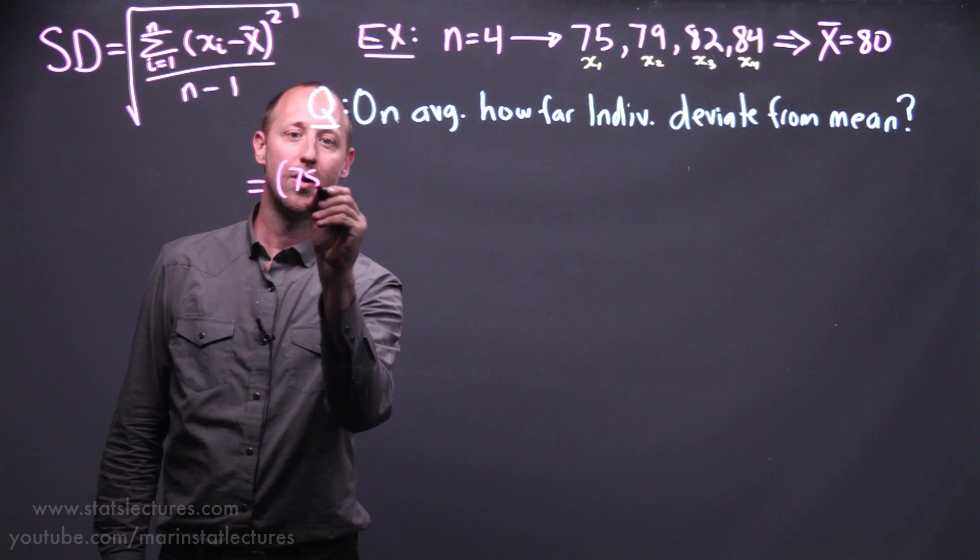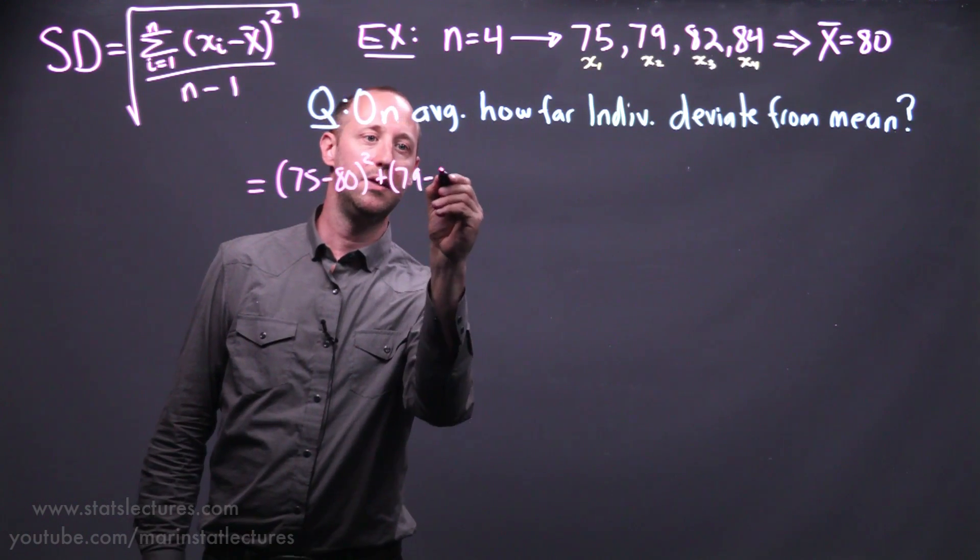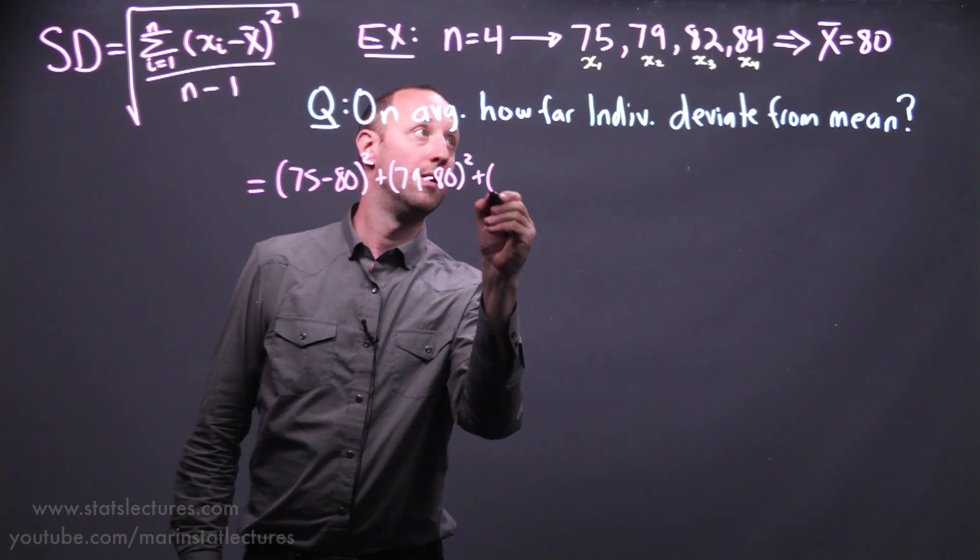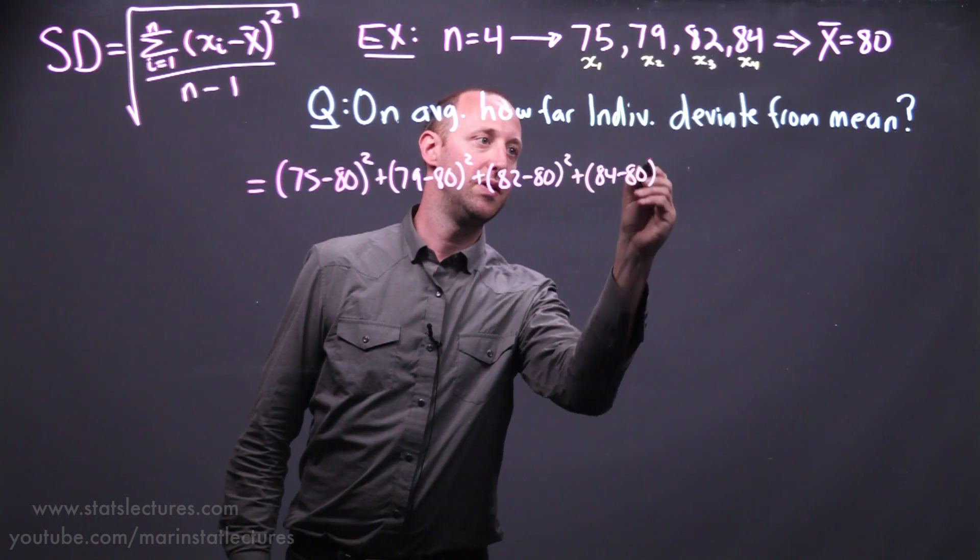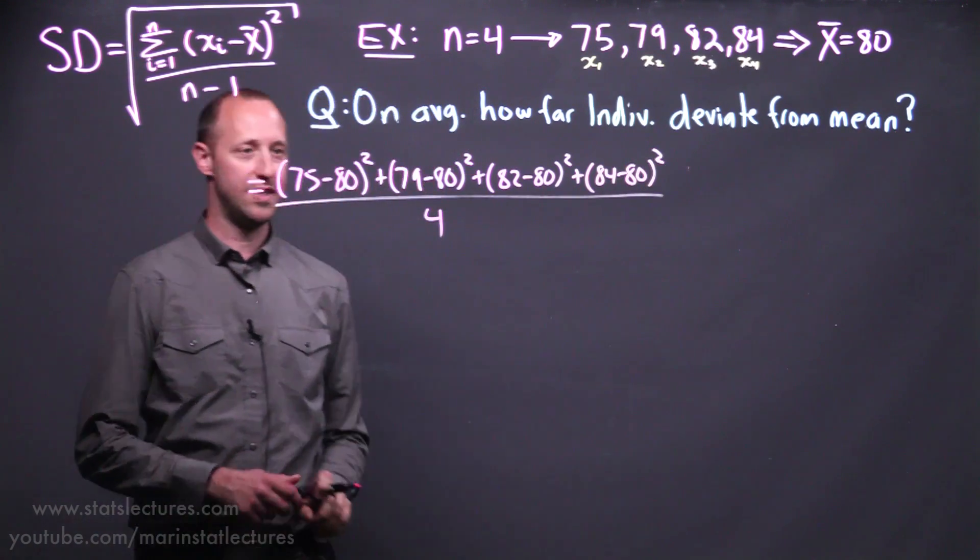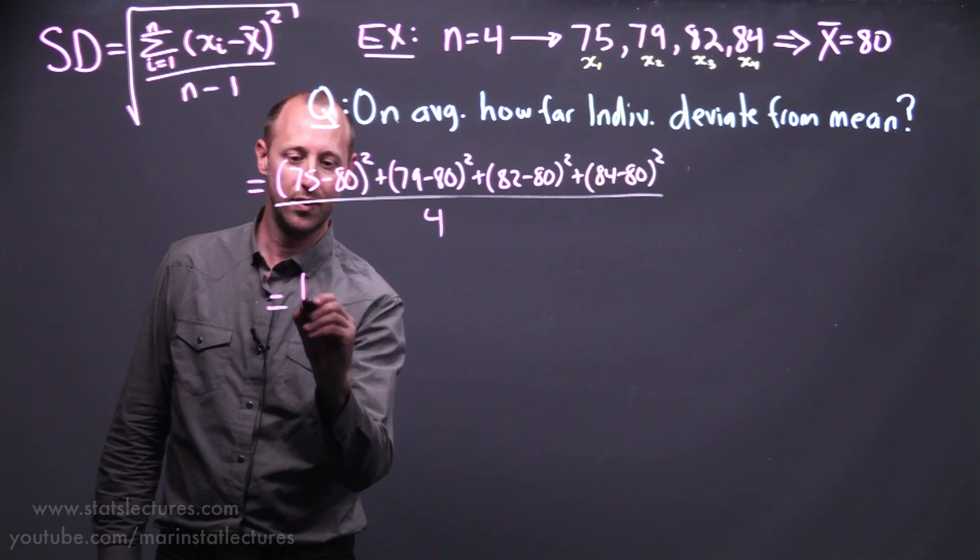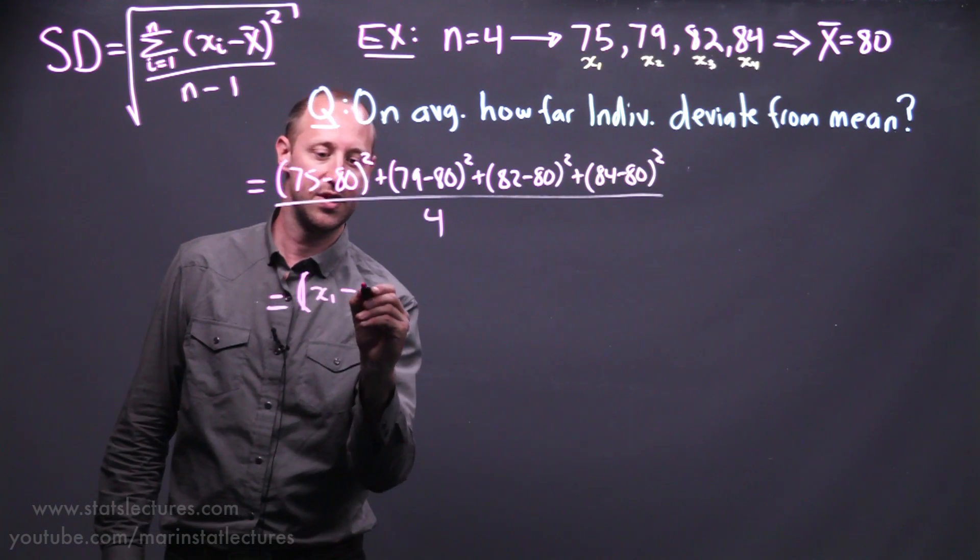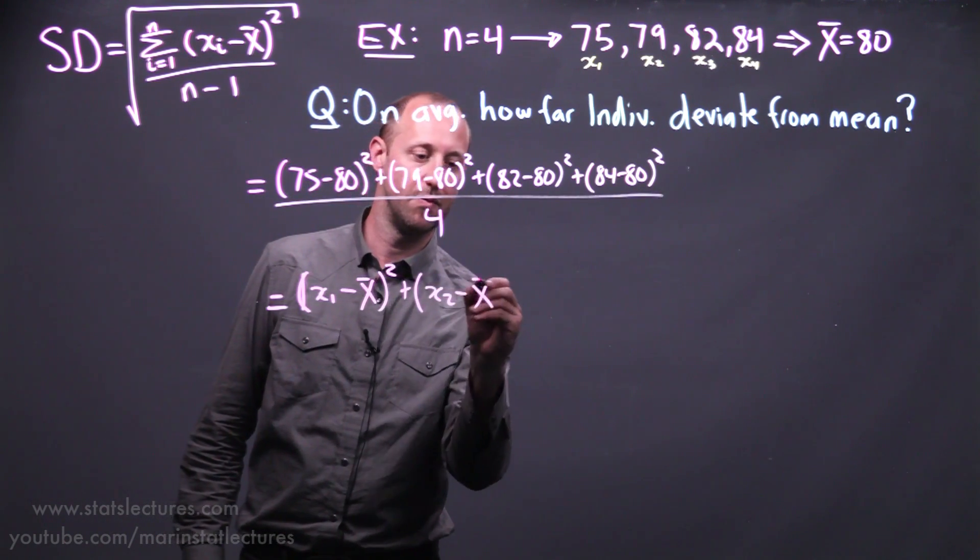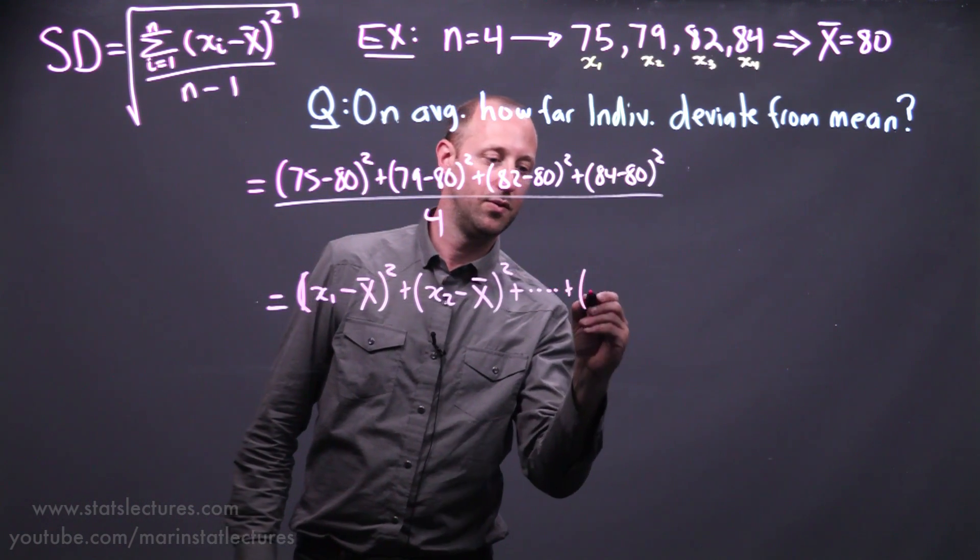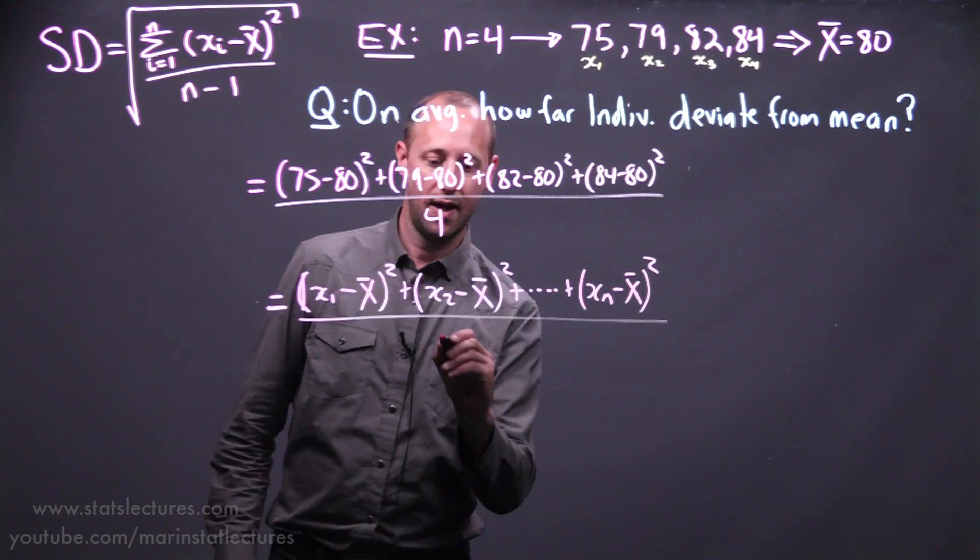We can look at how far was the first observation from the mean and square that. How far is the second from the mean, squared. How far is the next from the mean, squared. And how far is that last observation from the mean, squared. And we can average these. Again, let's write this out a bit more general. We can look at how far is the first observation from the mean and square that. How far is the second observation from the mean and square that. All the way up to the final or nth observation. How far is that from the mean and square that. And then divide by the number that we have.